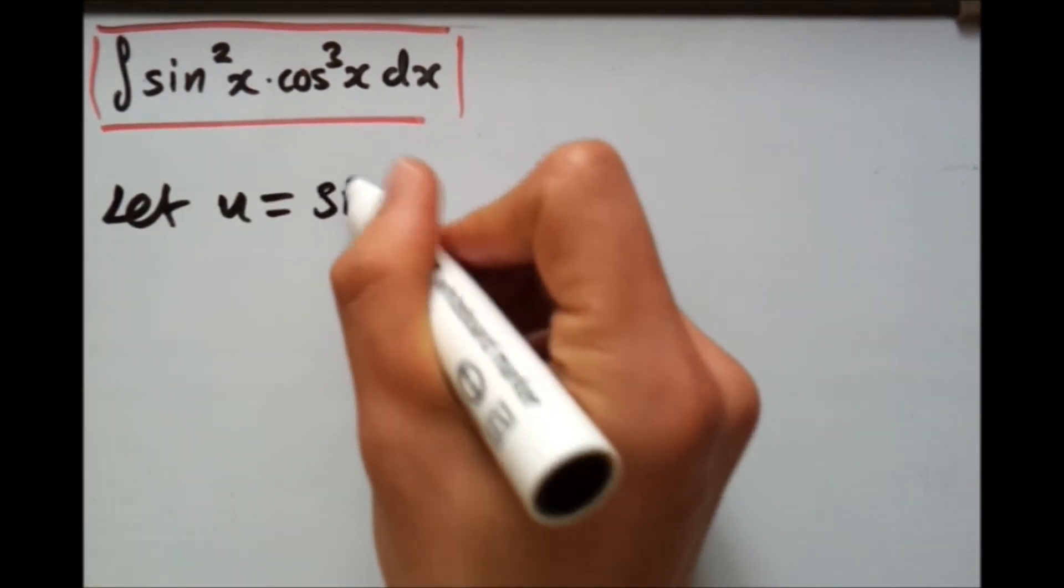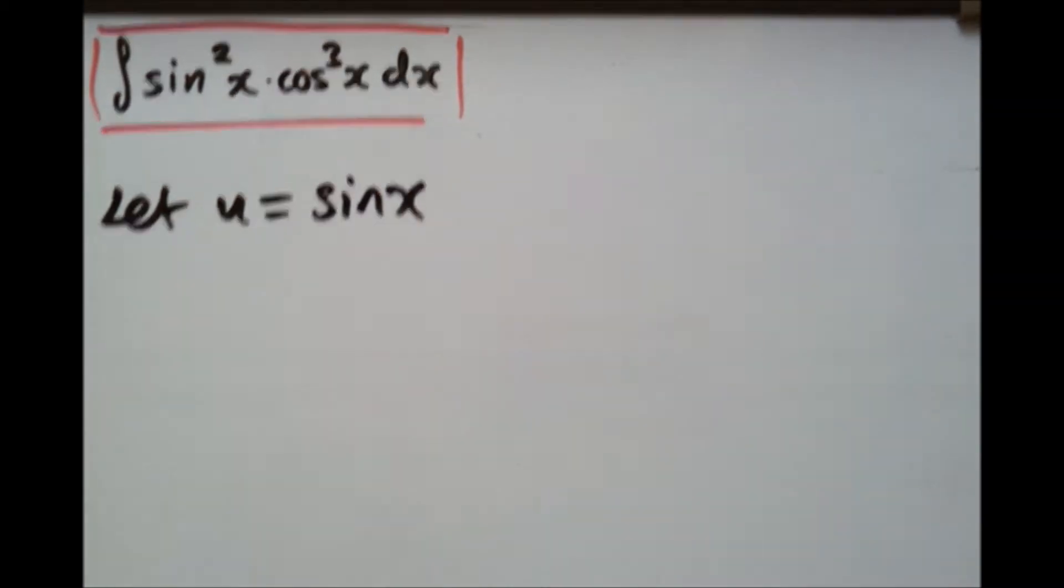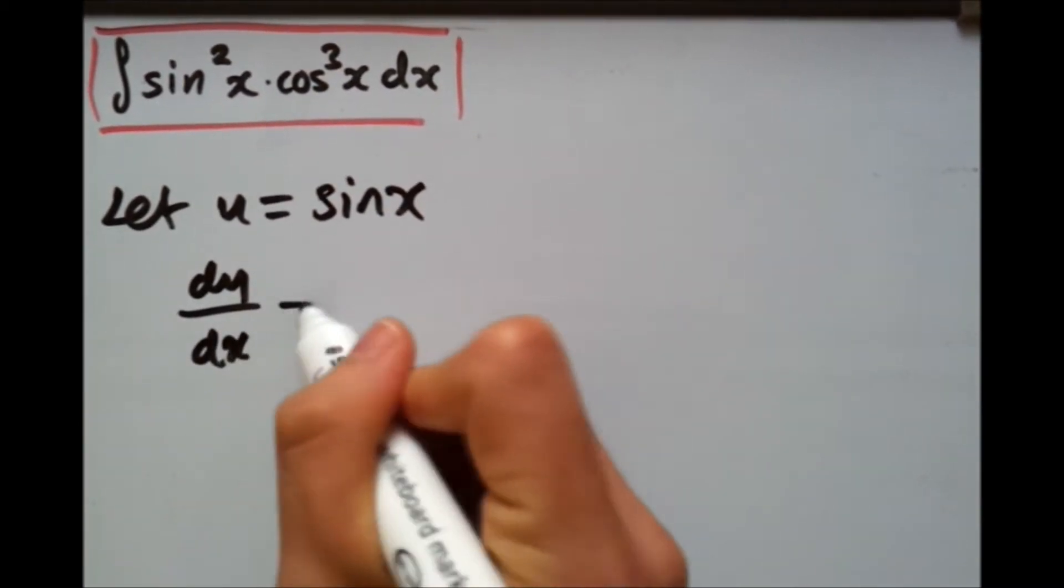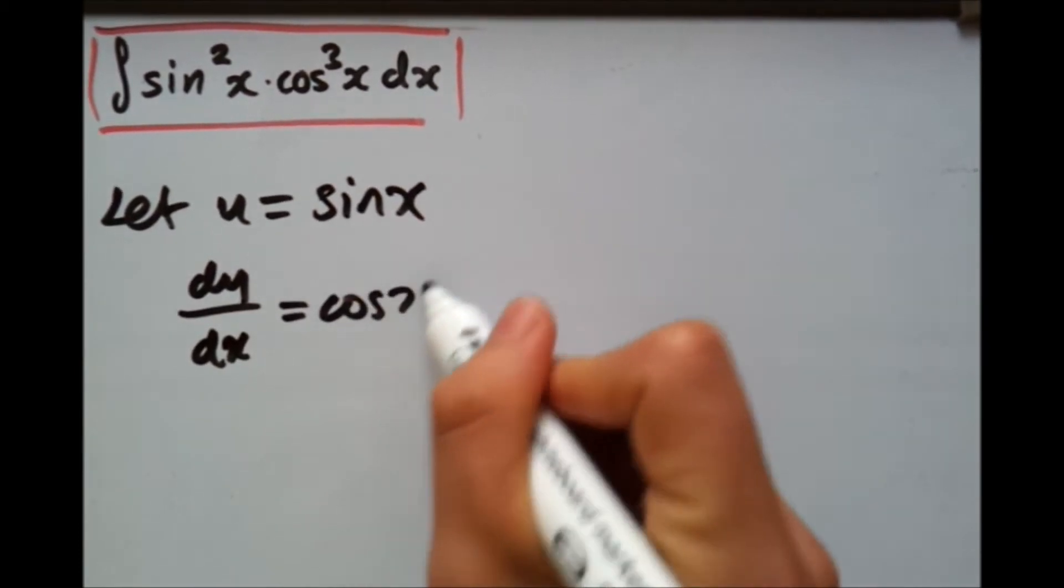So let me just say let U equal sin x. Now obviously we've got to differentiate this, so du over dx will give me a nice little cos x.